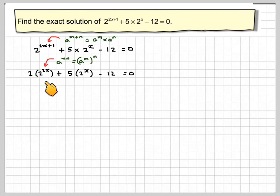Now we know that if we've got multiplied powers together, a to the mn, that is the same as a to the m to the power of n. So I'm going to write this as 2 to the x to the 2. So I've got 2 times 2 to the x squared plus 5 times 2 to the x minus 12.